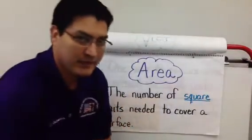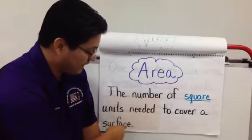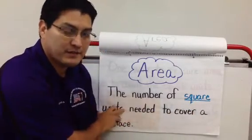What is area? Area is the number of square units needed to cover a surface. We're going to be focusing on the squares. You will see right now on the picture.